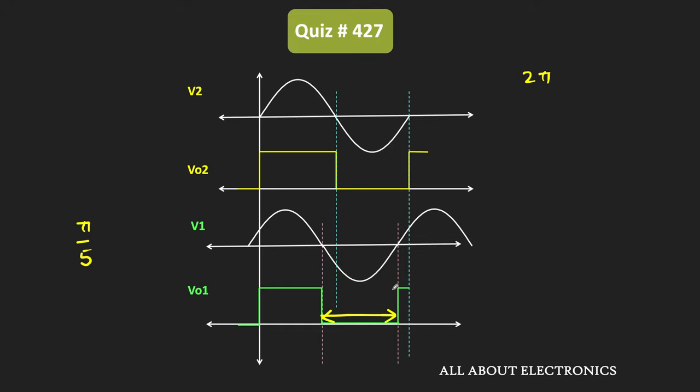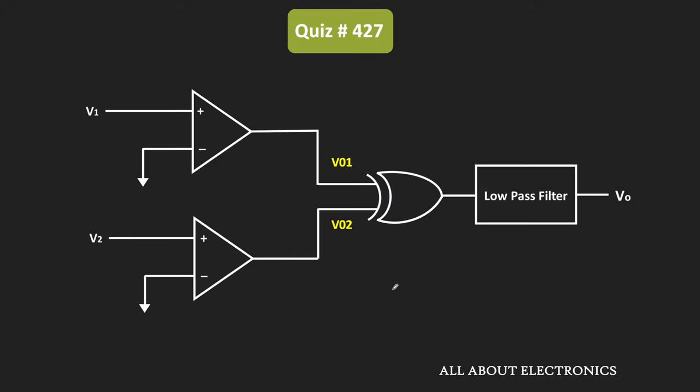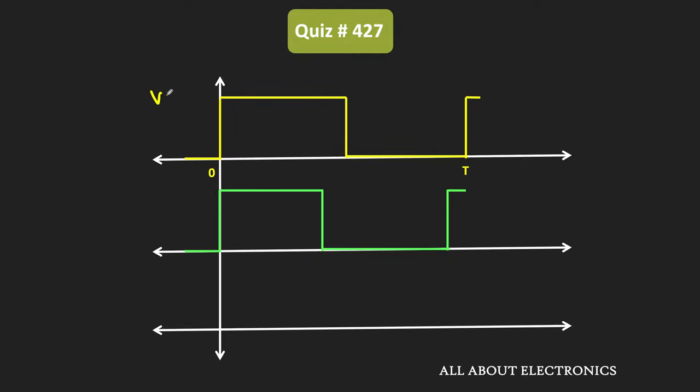These two signals V01 and V02 are given to the XOR gate. As you know, the output of the XOR gate is high when both signals are different. That means if both signals are high or low at the same time, the output of the XOR gate will be zero. But whenever both signals are different, only then its output will be high. In this case, during the time when only one signal is high and the other is low, the output of the XOR gate will remain high.